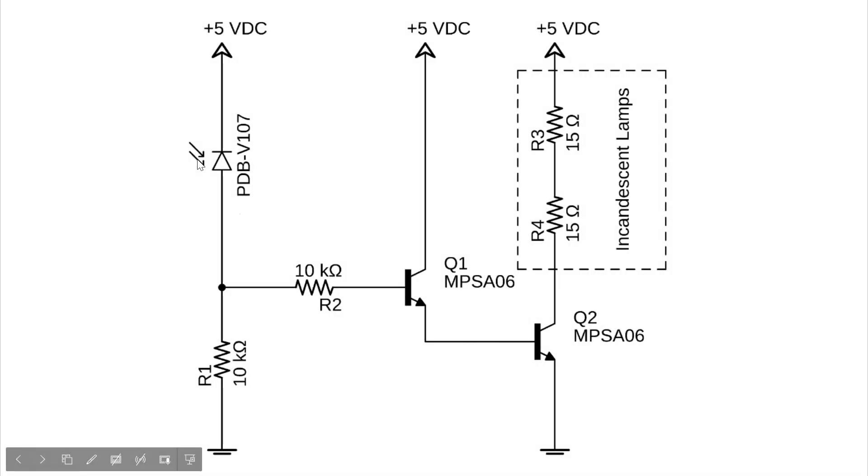As far as the circuit operation goes, when the red laser strikes this photodiode, you could think of it as a switch. When that switch is closed, there will be approximately 5 volts at this point. That 5 volts will forward bias Q1, will forward bias Q2, and it will then turn on the lights. So as the voltage goes up here, it goes up here, which means that it goes down here. Following that all the way through, that means that this circuit performs an inversion.